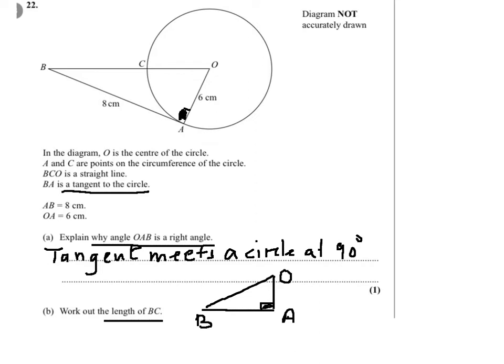And if we can work out OB, then we can work out BC, because we know that OC is the radius of the circle, and it is 6 cm.